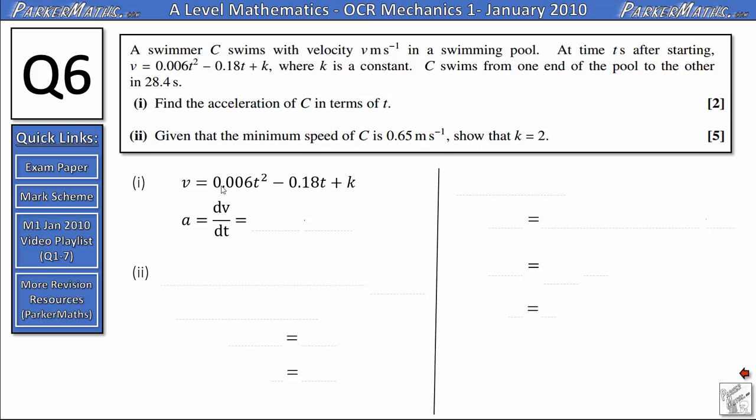So multiplying by the power would give us 0.012t and for the second term we need to drop the t, so we get minus 0.18 and that's simply our acceleration.